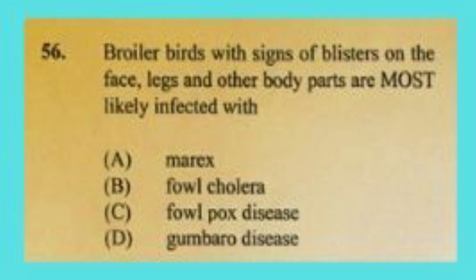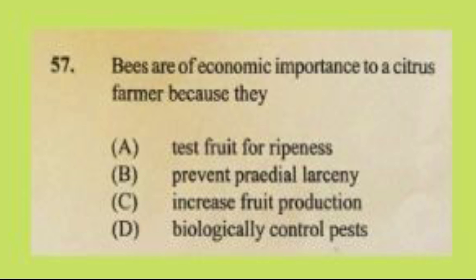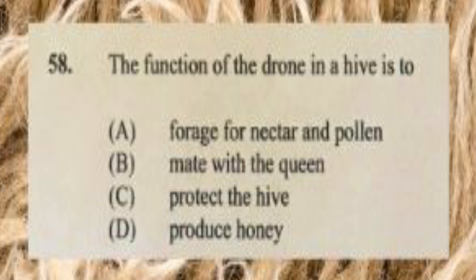Question number fifty-six: broiler birds with blisters on the face, legs, and other body parts are most likely infected with A) Marek's disease, B) fowl cholera, C) fowl pox disease, D) Gumboro disease. The answer is C, fowl pox disease. Question number fifty-seven: bees are of economic importance to a citrus farmer because they A) test fruit for ripeness, B) prevent predial larceny, C) increase fruit production, D) biologically control pests. The answer is C, increase fruit production.